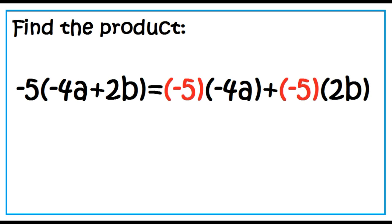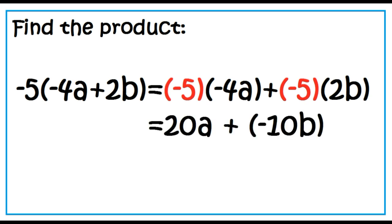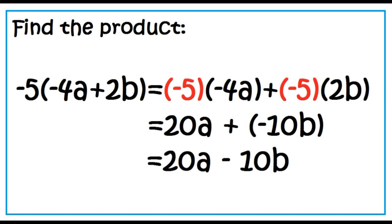Negative 5 times the quantity negative 4A plus 2B is equal to negative 5 times negative 4A plus negative 5 times 2B. The result, 20A plus negative 10B, can be written as 20A minus 10B.